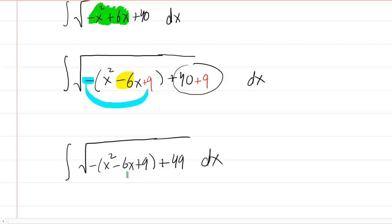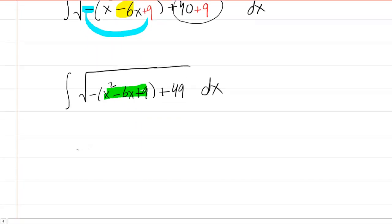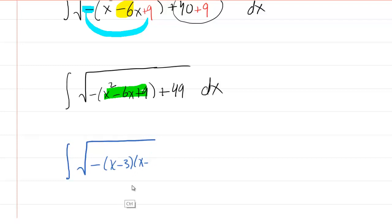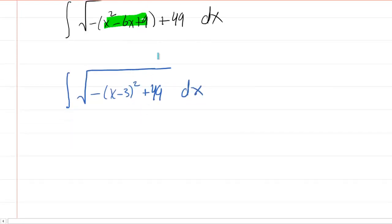Why would we ever choose to do this? Well, this expression right here is a perfect square trinomial. That means it can factor into x minus 3 times x minus 3. We can recondense that into x minus 3 squared, plus 49. So far, so good. Now, in order to continue transforming this into something resembling trigonometric substitution, we're going to do a u-substitution next.